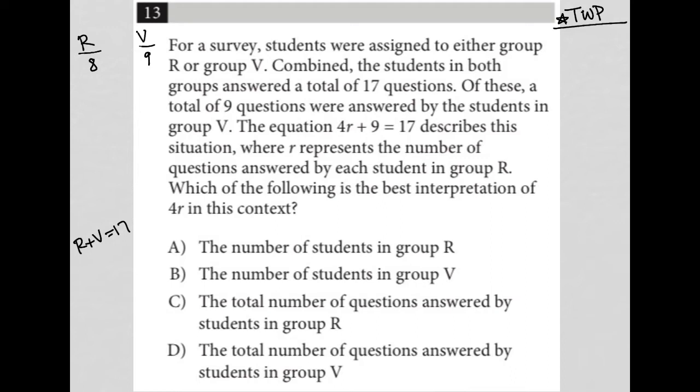So, of these, a total of nine questions were answered by the students in group V. The equation 4R plus nine equals 17 describes this situation. Interesting, okay, where R represents the number of questions answered by each student in group R. Okay, so that's the difference, right?